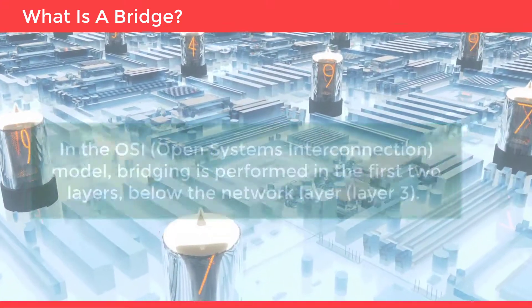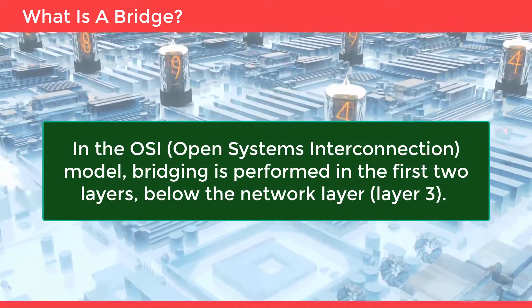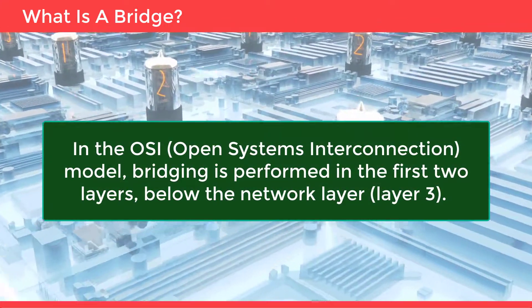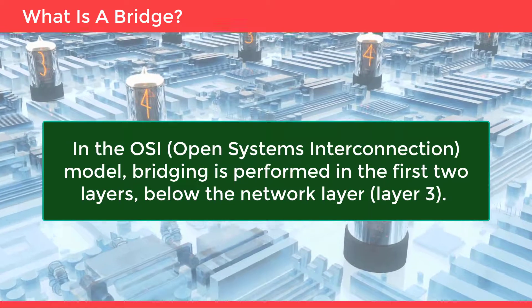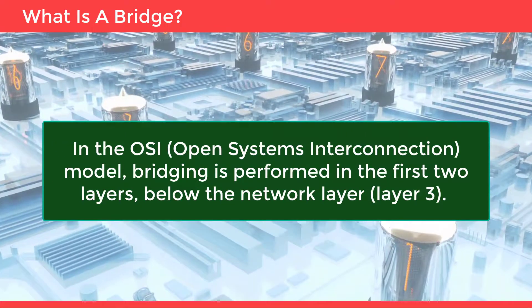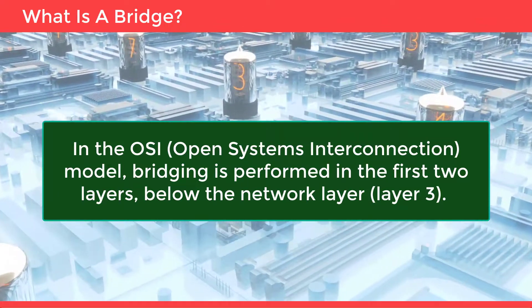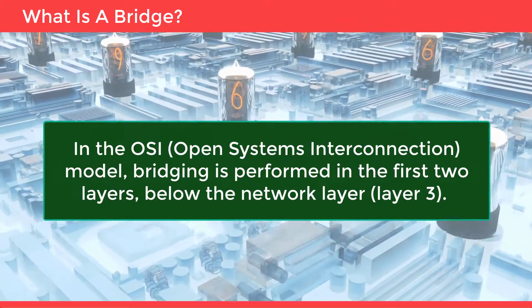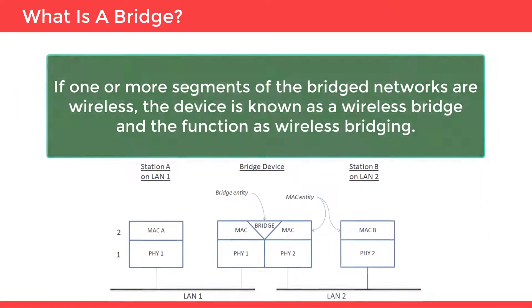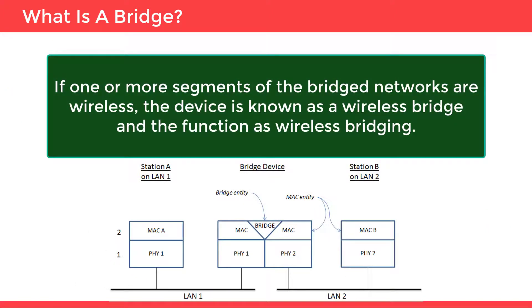In the OSI open systems interconnection model, bridging is performed in the first two layers below the network layer, which is layer 3. If one or more segments of the bridged network are wireless, the device is known as a wireless bridge and the function as wireless bridging.